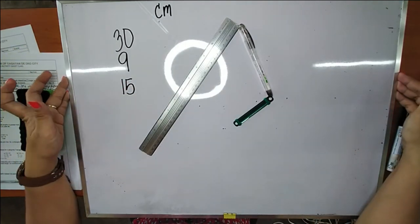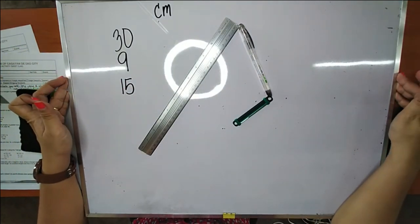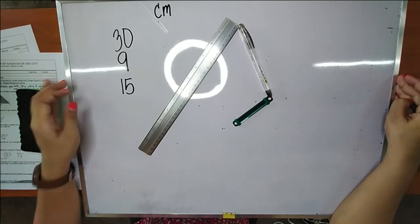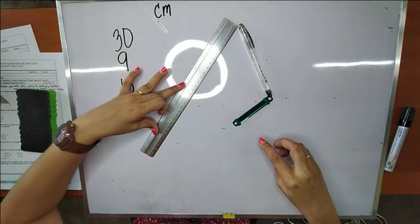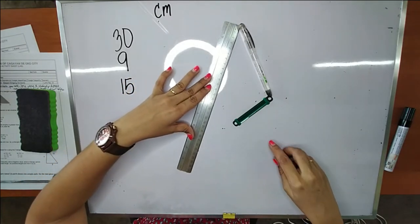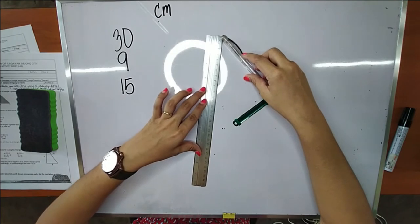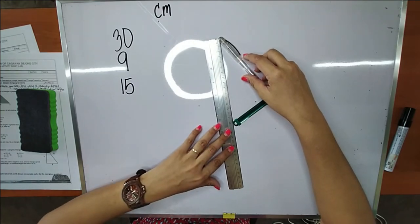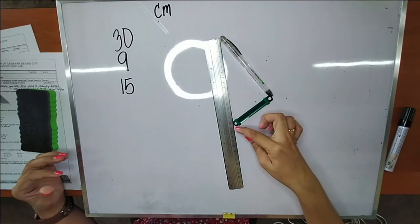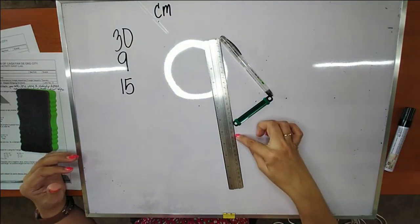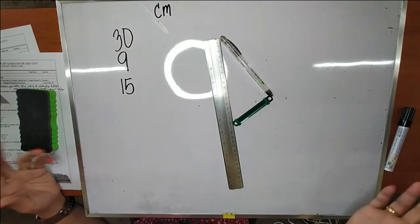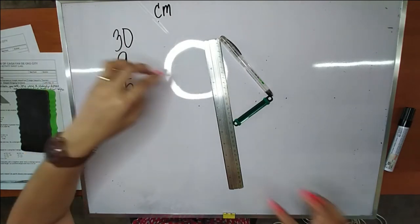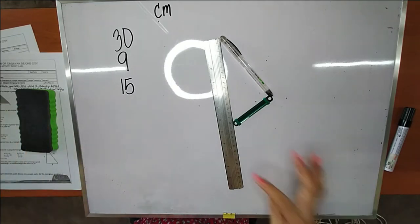Remember that a triangle is a closed polygon — both ends must connect. As you can see, when we try to stretch the materials into a triangle shape, there is one material whose length sticks out beyond the others — that is the ruler. It sticks out and does not fit within the triangle, which means it cannot work.